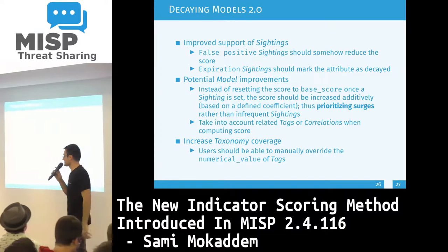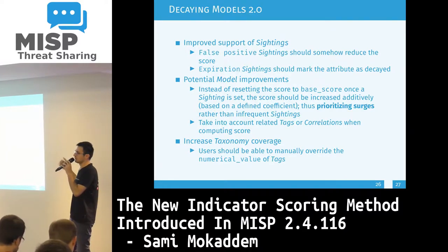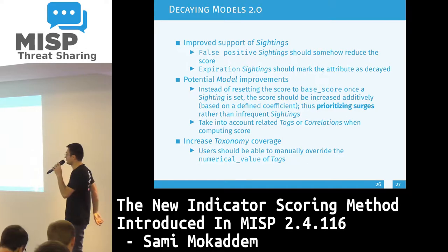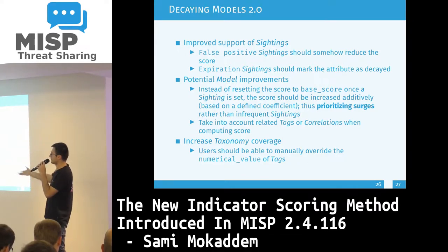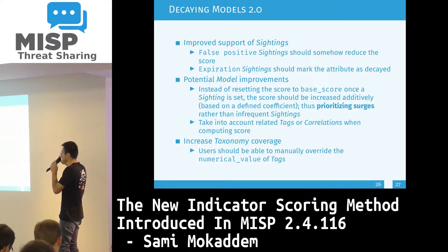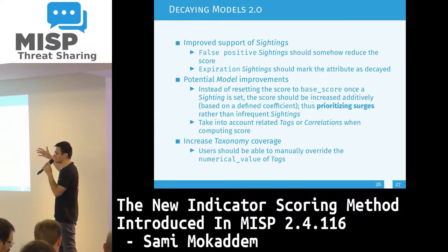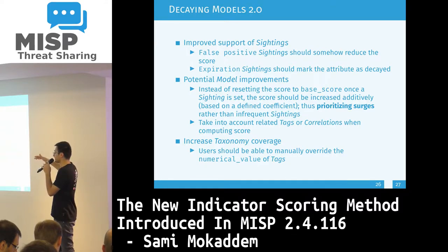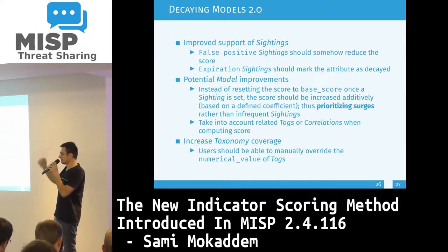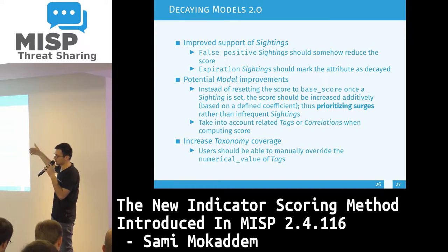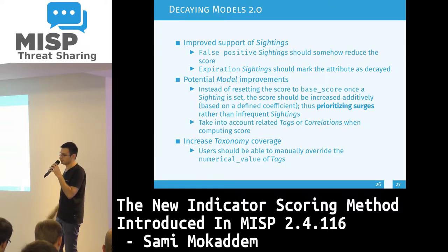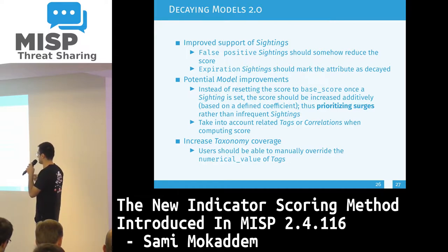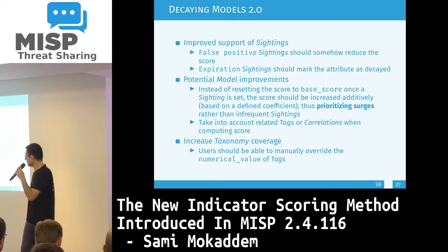What we're planning in the second version of the decaying model: improved sighting support — we currently only support standard sightings, but we also want to incorporate false positives which would decrease the score further, and expiration sightings which would take precedence similar to the retention taxonomy. Some potential model improvements — instead of just resetting the score to the base score on a sighting, doing it additively to prioritize surges over isolated sightings. And also increasing the taxonomy coverage.